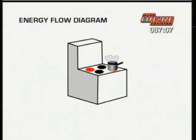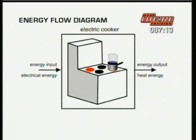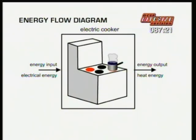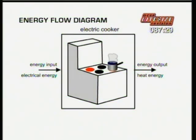A good way of showing how energy changes is with an energy flow diagram. If you put the energy converting process, like an electric cooker, in a box, you can show the energy input coming in from one side and the energy output going out on the other side. In the case of the electric cooker, the energy input is electricity and the energy output is heat and some light. How could you extend this flow diagram backwards?